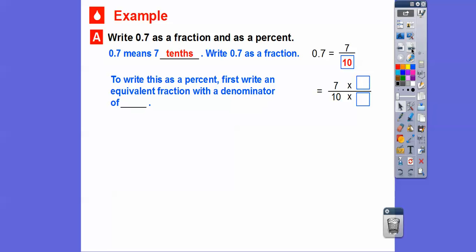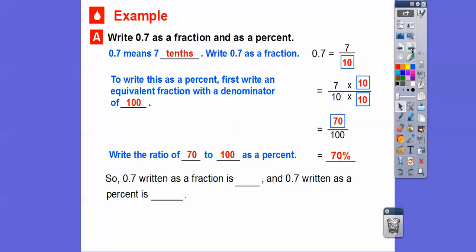To write this as a percent, we can write an equivalent fraction with a denominator of 100. So 10 times what equals 100? We're going to multiply this by 10 over 10, so we get 7 times 10 on top, or 70, so 70 hundredths. 70 hundredths is the ratio of 70 to 100 as a percent. Remember, percent means per 100, so here we have 70 hundredths, so this is going to be 70 percent.